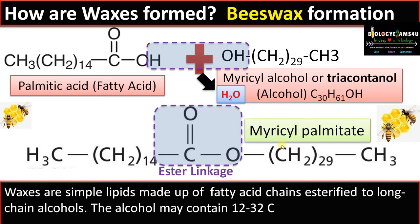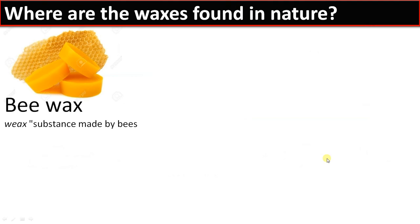This is how bee wax is formed — it is primarily made up of myricyl palmitate. Now moving to the second point: where are waxes found in nature? The most common wax is bee wax. The word origin of 'wax' comes from the German term 'weeks,' meaning made by bees.